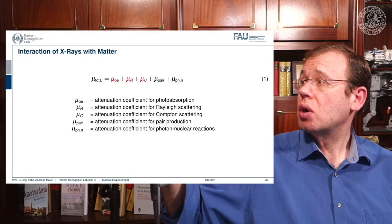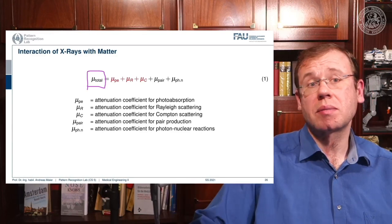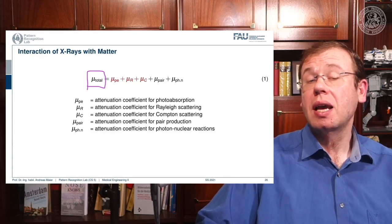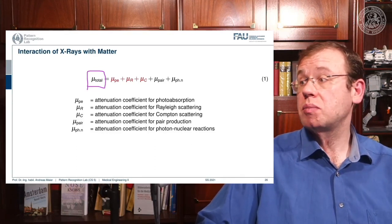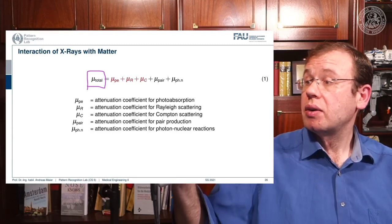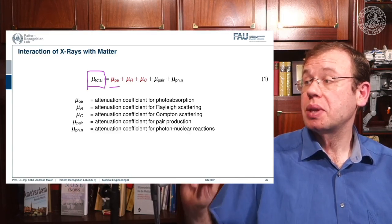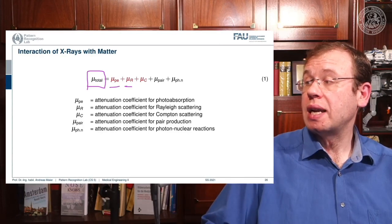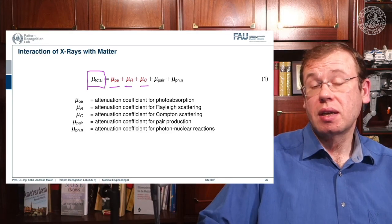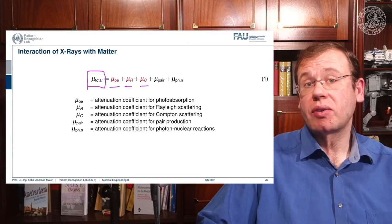One thing we should talk about is how mu is actually composed. Mu is a material-dependent characteristic, but it's composed of a series of different effects. There is mu-PE, which is photoelectric absorption; there is mu-R, which is Rayleigh scattering; and there is mu-C, which is Compton scattering. These three effects are relevant for most x-ray imaging.